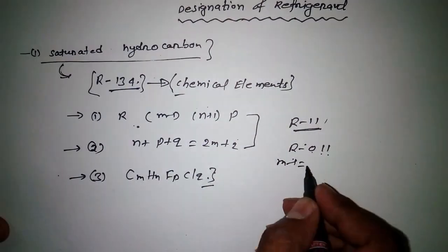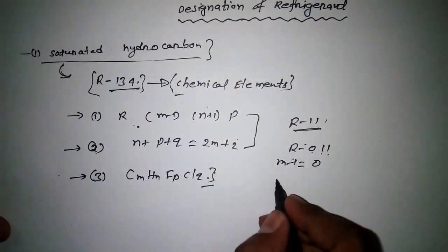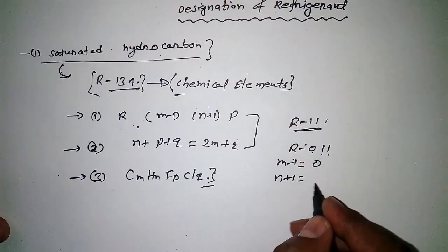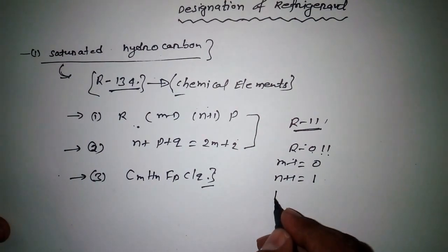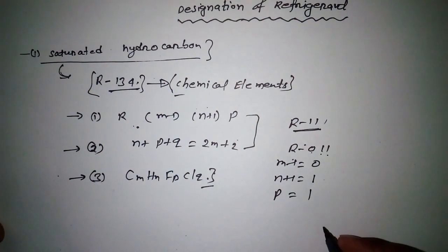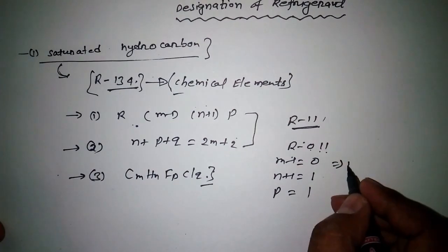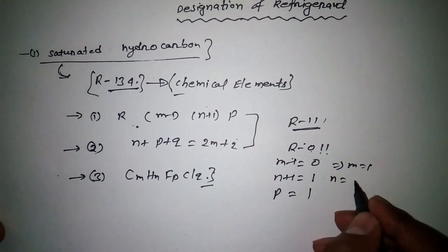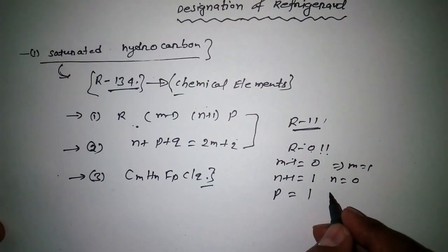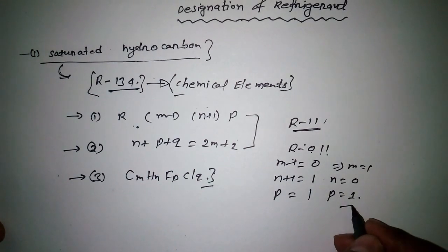Comparing with the formula: m-1 = 0, so m = 1. n+1 = 1, so n = 0. And p = 1. By comparing with the standard formula, we can determine the element values.